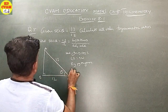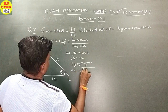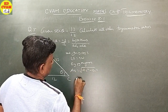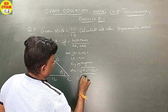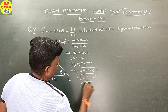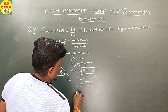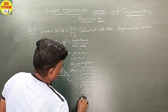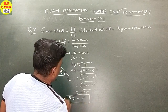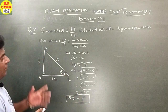AB is equal to square root of AC square minus BC square. That gives AB equal to 5. Now with all sides known, we can find all trigonometric ratios.